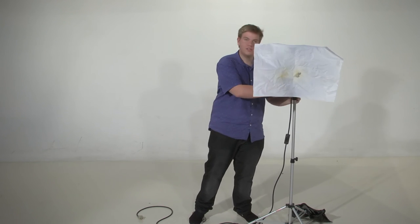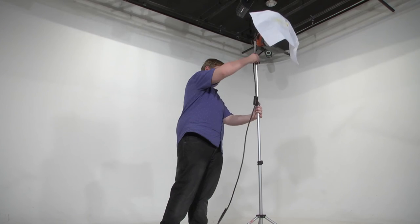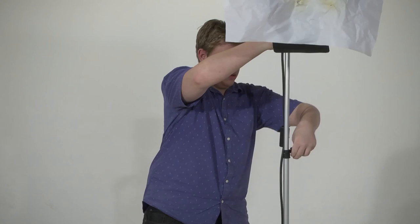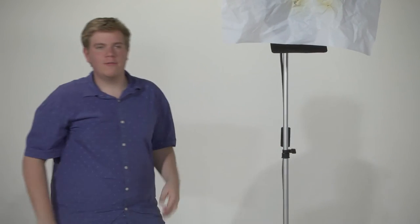Bring the light back around. Loosen the main pole again. Tighten it off at a good height.